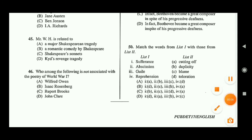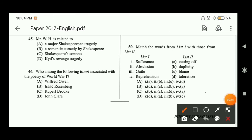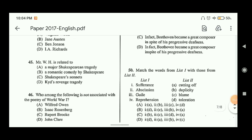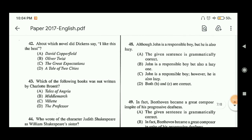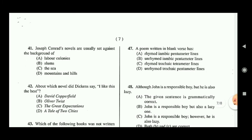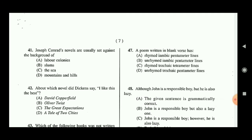Question forty-five: Mr. W.H. is related to Shakespeare's sonnets — Shakespeare addressed his sonnets to him. Question forty-six: who among the following is not associated with the poetry of World War One? The answer is John Clare, option D. He was a peasant poet and also a Romantic poet, not associated with WWI poetry.